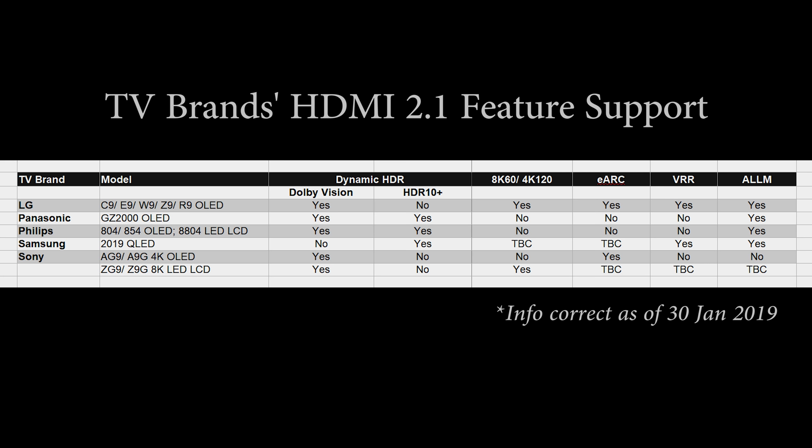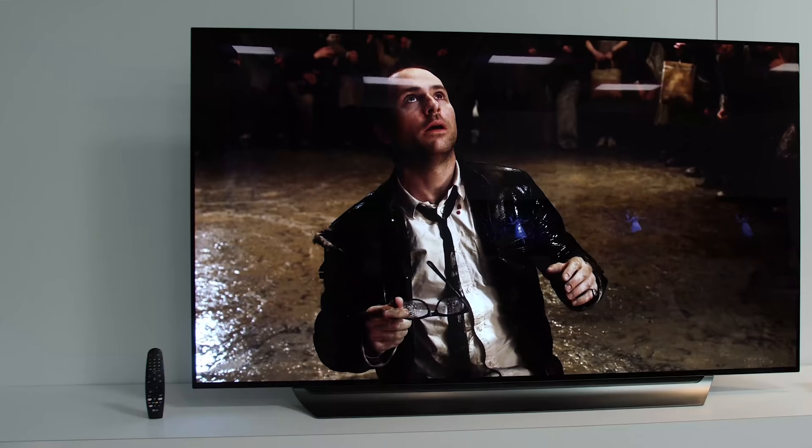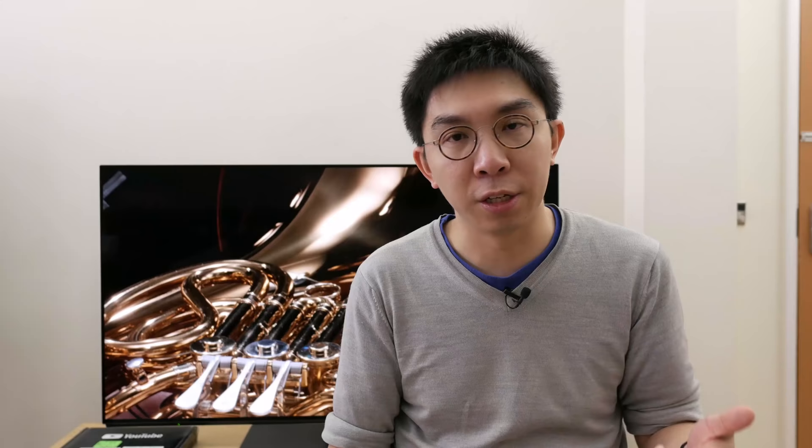So those are the main HDMI 2.1 features available on 2019 TV sets. I'm going to show you a chart here telling you which TV manufacturer supports which HDMI 2.1 feature. TBC means to be confirmed — we still need more information from the TV brand in question. From what I can tell, the LG 2019 OLEDs — whether 4K or 8K — will have higher bandwidth support, enhanced eARC, auto low latency mode, and variable refresh rate. So if you really want a 2019 TV that supports all HDMI 2.1 features to future-proof your TV, LG is definitely the one to go for.